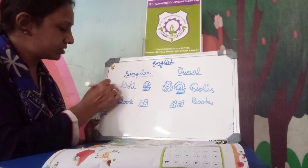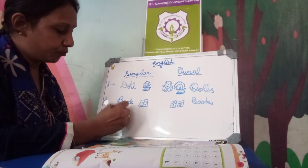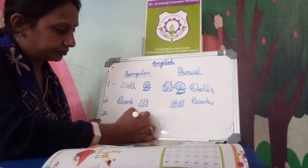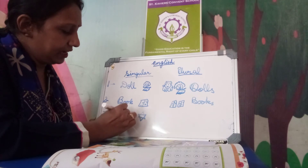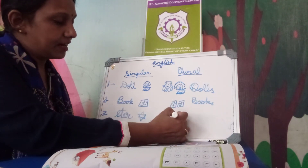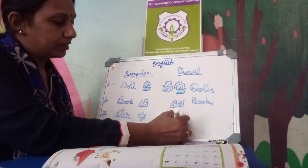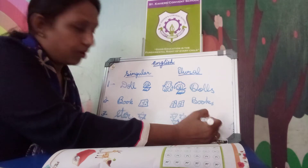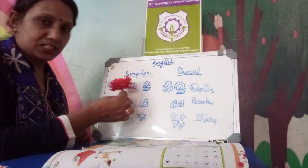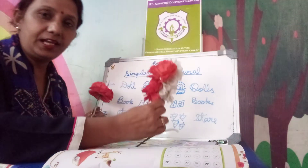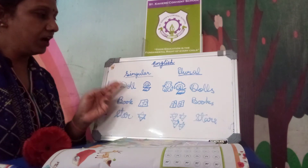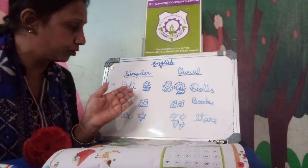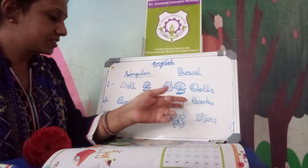Point three — see that this is what? One star. S-T-A-R. Star. And these are many, so what will they all be called? Stars. Stars. Alright, so one is singular and many is plural. One doll — singular. One book — singular. One star — singular. When you have to make the plural of the singulars, what will you do? Doll — dolls. Book — books. Star — stars.